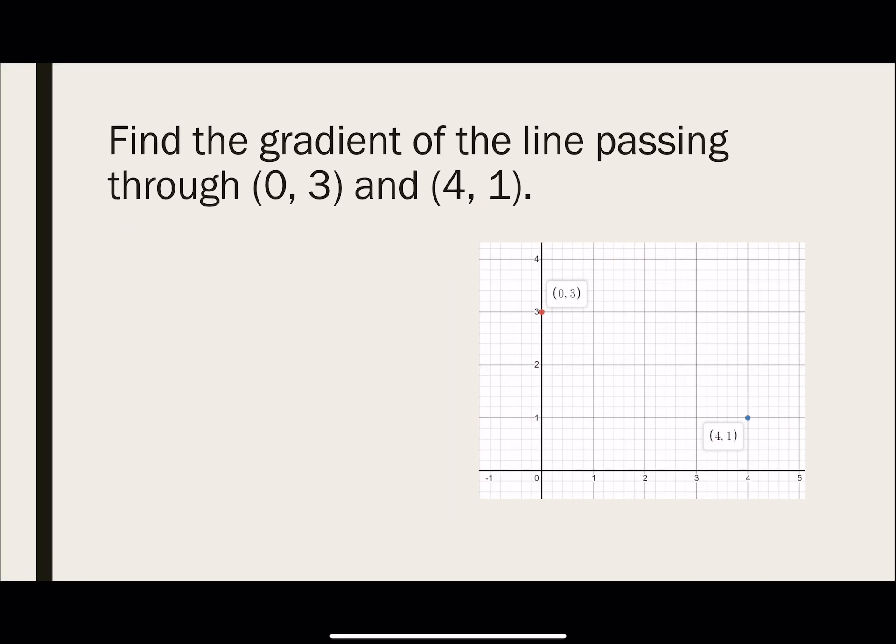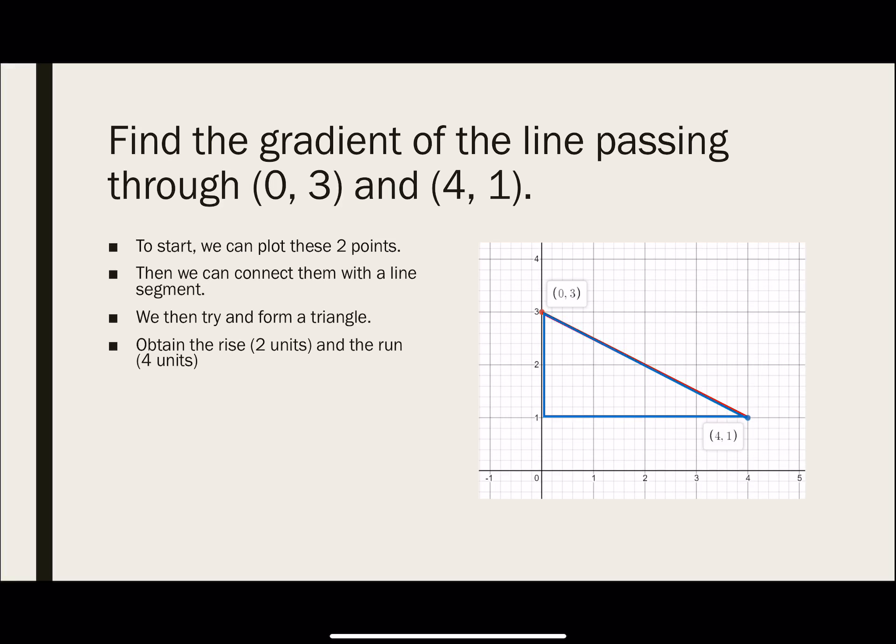So what if I give you two coordinates instead? Find the gradient of the line passing through (0, 3) and (4, 1). So what you will notice is that we can actually plot out the point (0, 3) and (4, 1). Then what we can do is that we can connect them with the line segment and try to draw a triangle so that it makes it easier for us to see how much is the rise and how much is the run. So in this question, we have 2 units for the rise and 4 units for the run. Gradient is rise over run, which means that we have 2 over 4. And we can reduce this to half. And again, you'll notice that I've added a negative sign as this is a downward negative slope.